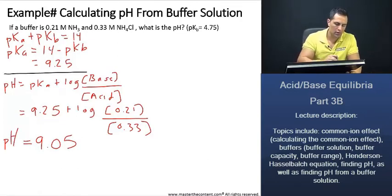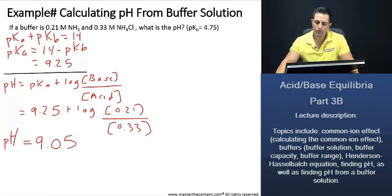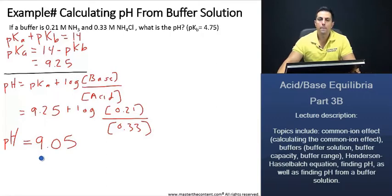Now, there are a few things that we want to note here. Firstly, if we notice, our pH value is 9.05 and it's within one pH unit of our pKa. And because of that, we know that this is a good buffer solution.